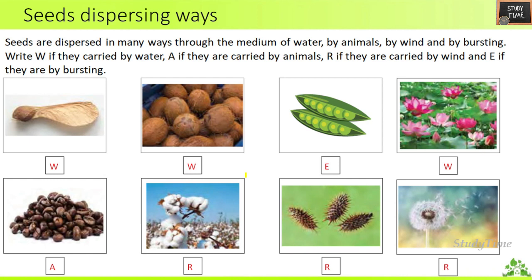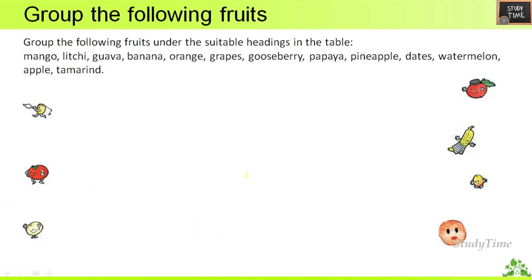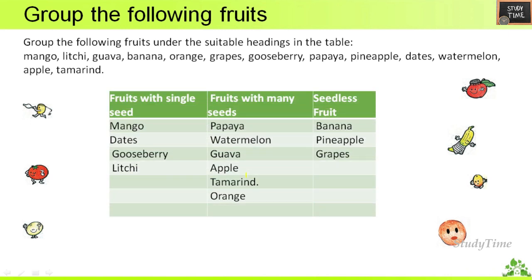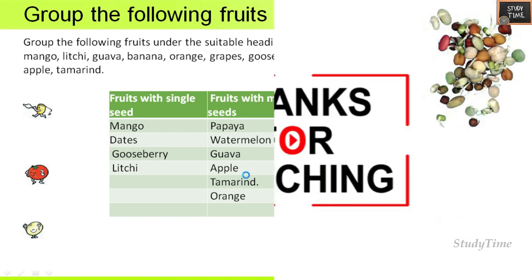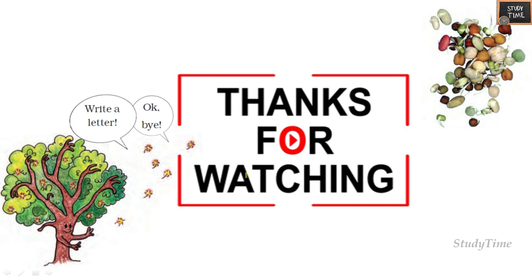Group the following fruits under suitable headings: fruits with single seed, fruits with many seeds, and seedless fruits. Fruits with single seed: mango, dates, gooseberry, litchi. Fruits with many seeds: papaya, watermelon, kova, apple, tamarind, orange. Seedless fruits: banana, pineapple, and grapes.